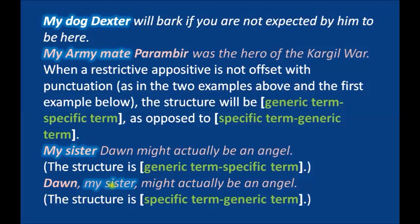When the specific term comes first and the generic term follows — as in 'Dawn, my sister, might actually be an angel' — you separate them with commas. So the key is: generic term + specific term allows you to drop the comma, but specific term + generic term requires punctuation such as commas, brackets, or dashes.